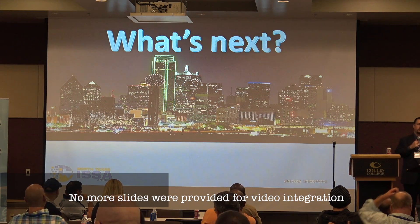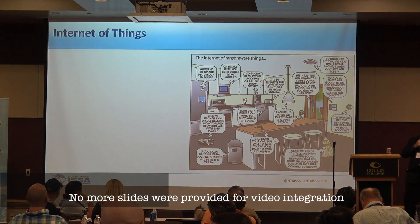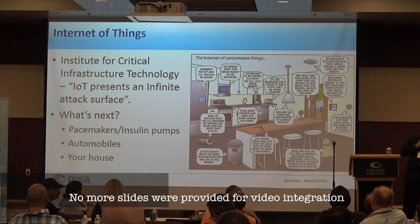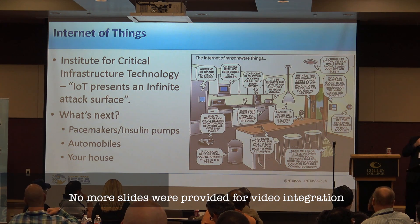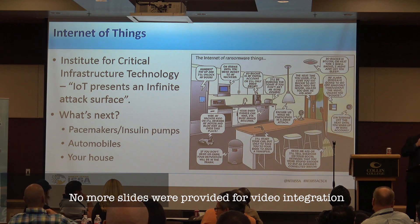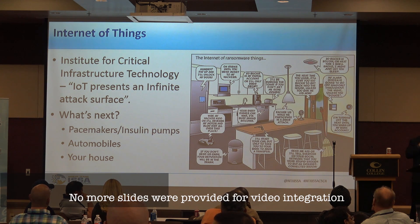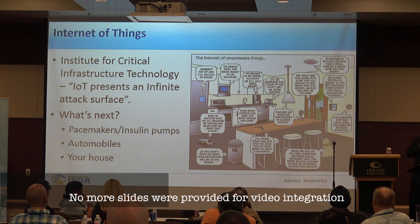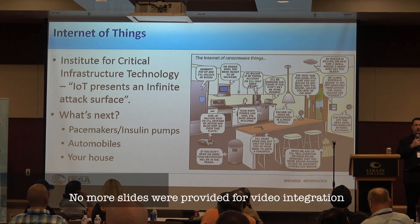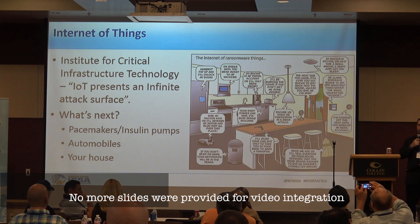What's next in the world of ransomware? The Internet of Things. The Institute for Critical Infrastructure Technology says IoT presents an infinite attack surface — not just ransomware. If you've been paying attention to InfoSec news, Krebs on Security was shut down by a one-terabit DDoS attack using IoT as the attack vector. IoT is a great advance in technology, but unfortunately there's very little security preventing attacks, which is why we think IoT is the next major vector for ransomware.